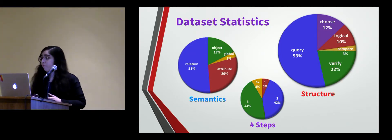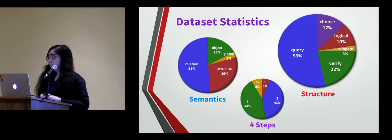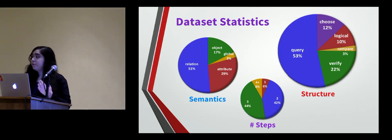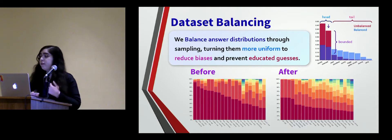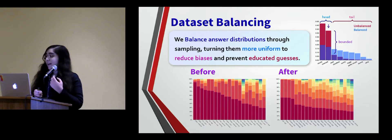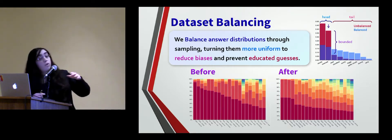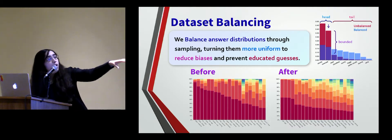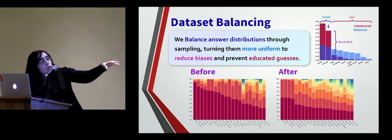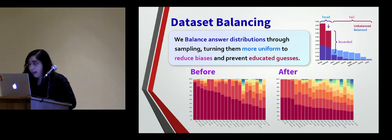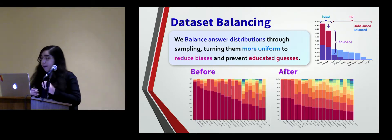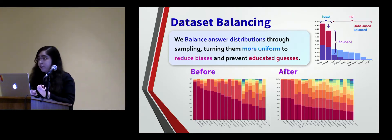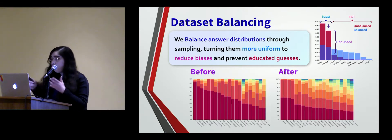Having these structured representations for both questions and images offers multiple advantages. One is the potential to reduce biases. We introduced a new balancing method based on sampling that takes advantage of the structured representation of each question to make the conditional answer distribution more uniform with heavier tails. You can see the distributions before and after — they become more uniform, with each question type having a more uniform distribution. Because for each question we have a formal representation of its semantics, we can use them mathematically to ensure that the question-conditional answer distributions get more balanced.